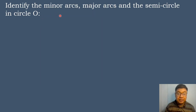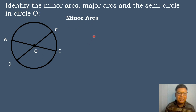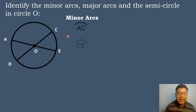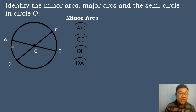Let's try to identify the minor arcs, major arcs, and the semicircle in circle O. The minor arcs, which measure less than 180 degrees, are: arc AC, arc CE, arc DE, and arc AD.